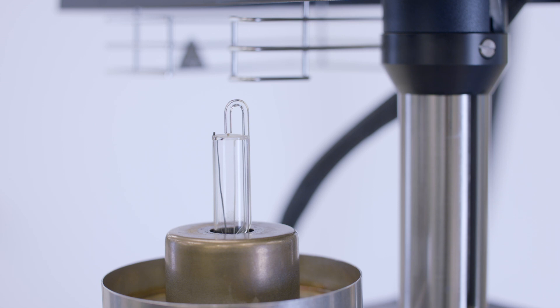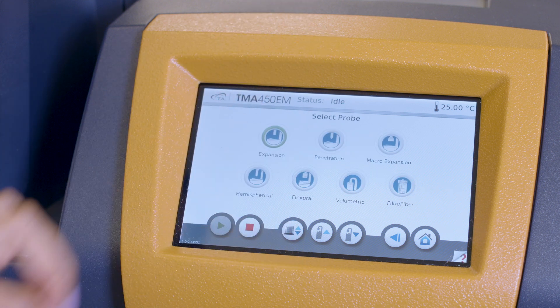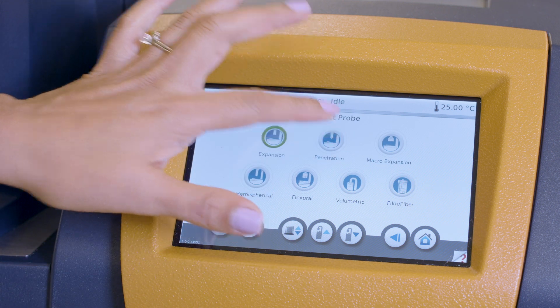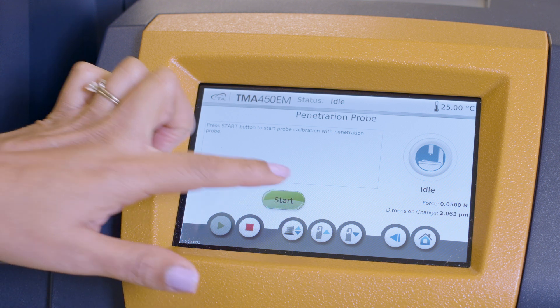Anytime you change probes, you need to calibrate the installed probe. You can calibrate the probe from the instrument touchscreen by selecting Calibration, Probe, and then the icon of the installed probe.